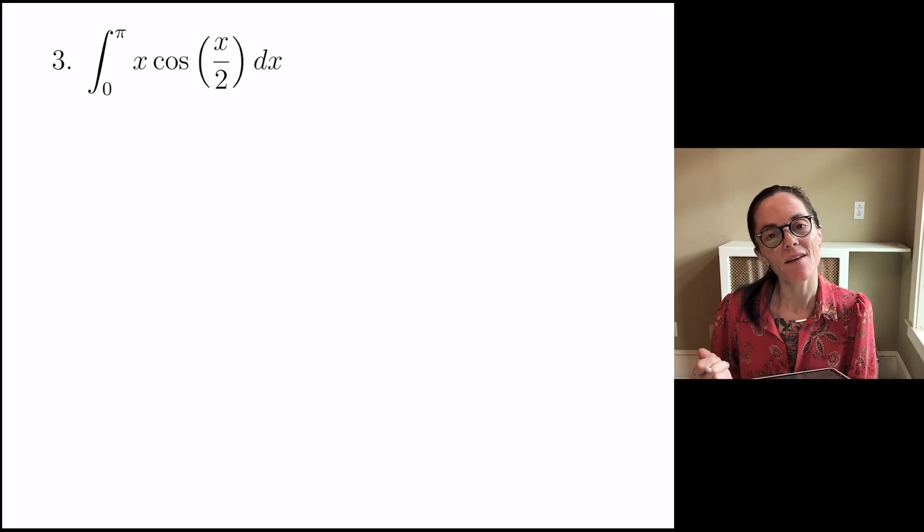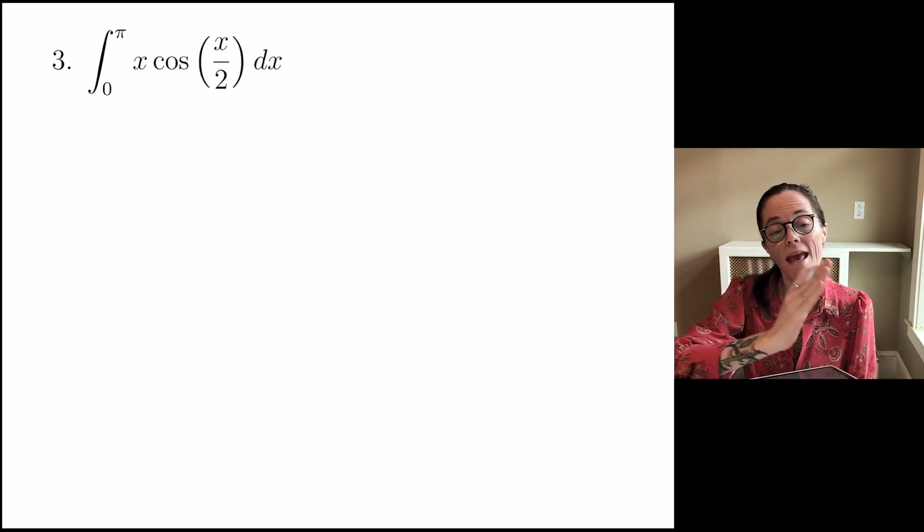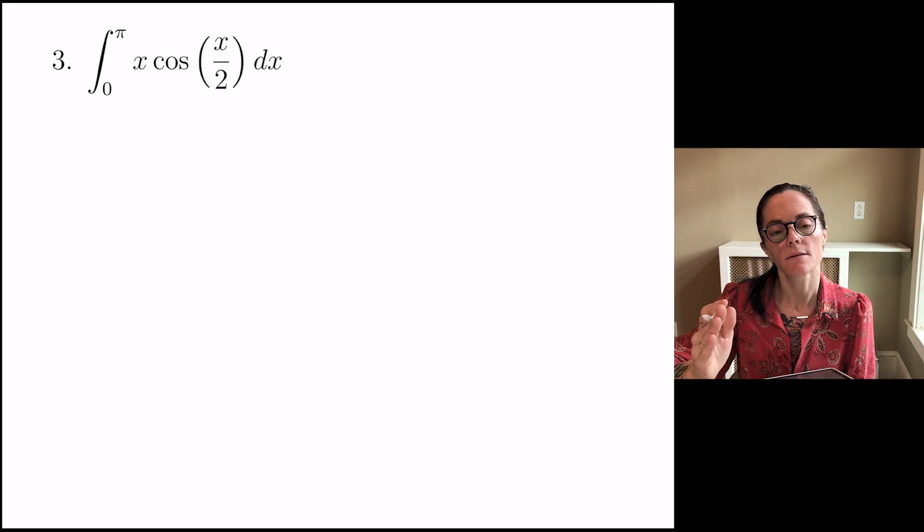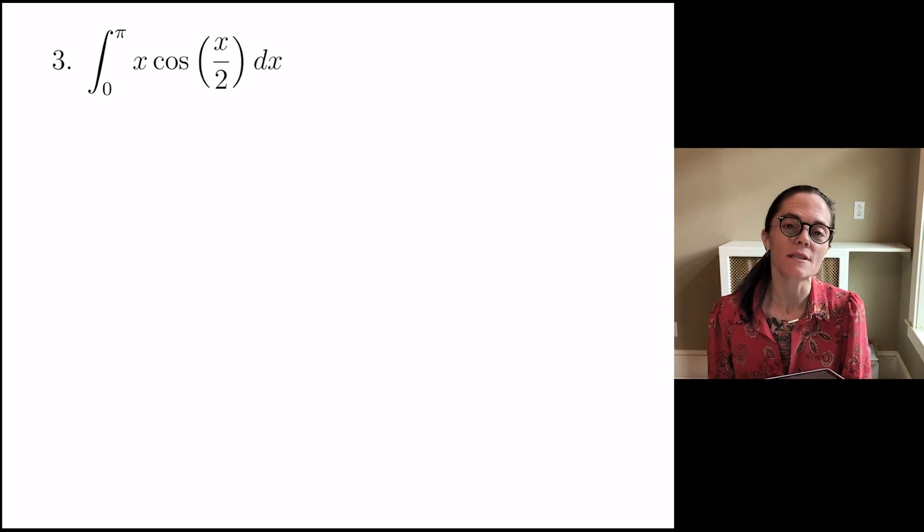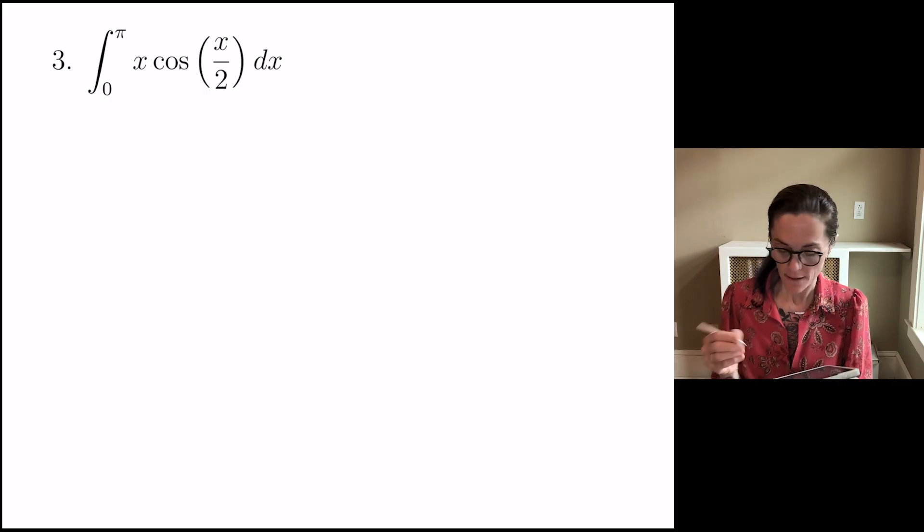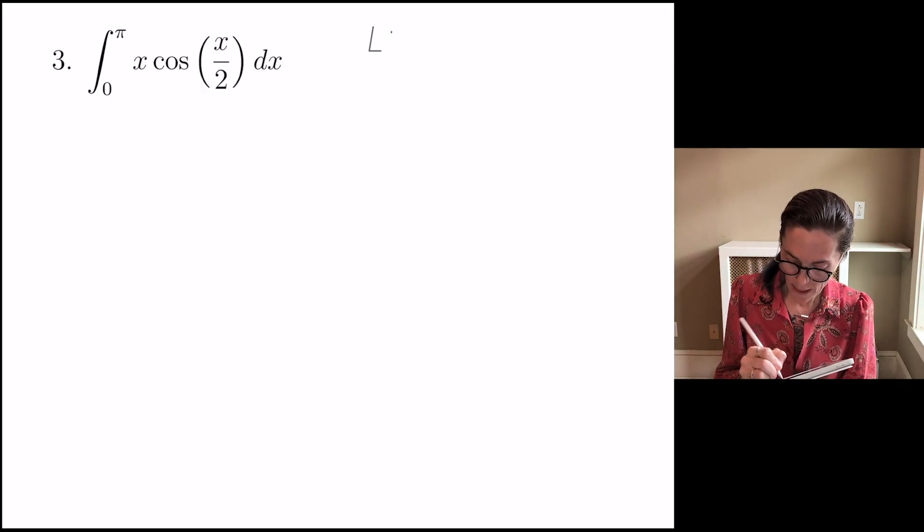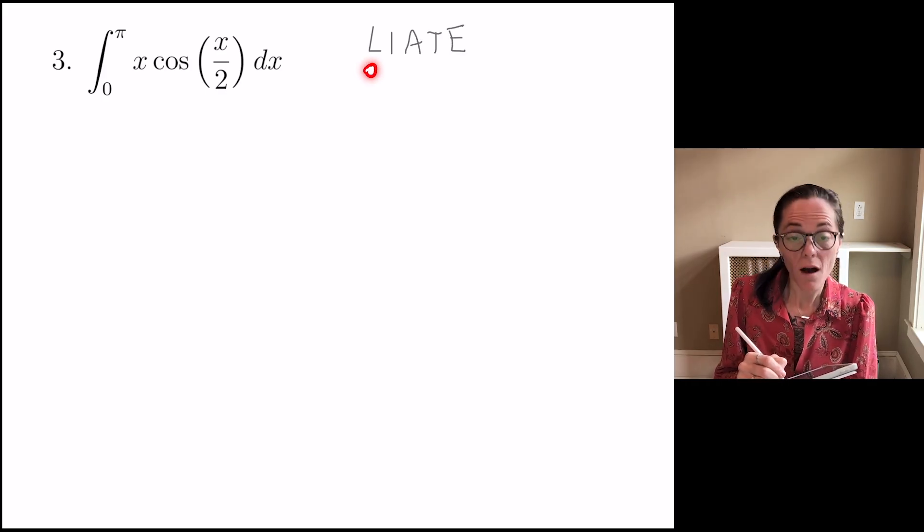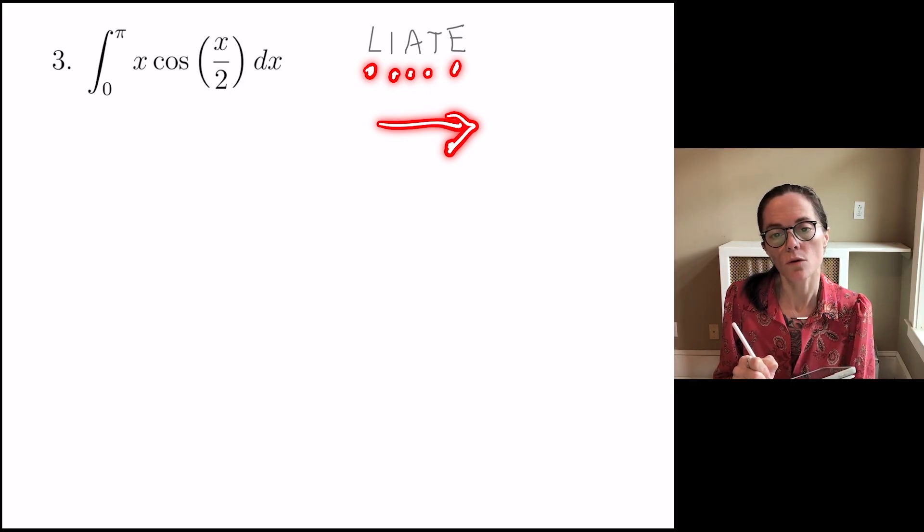Number 3. We have another definite integral. Now, what do we observe? We have a product, x times cosine x over 2. So we're going to be using integration by parts here. Let me remind you of this acronym LIATE. This stands for log, inverse trig, algebraic, trig, and then exponential. And we go in this order for selecting the u.